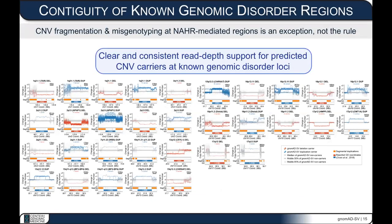Regarding the fragmentation issue: one way we reassessed the contiguity of our CNV calls is by looking at the same 49 previously reported genomic disorder loci. Showing the estimated change in copy number for deletion carriers in red or duplication carriers in blue, the change in copy number is abundantly clear for almost all of our predicted carriers at almost all of these genomic disorder loci. The case where CNV calls are being fragmented in gnomAD does happen, but it seems to be pretty rare from everything we've been able to see.